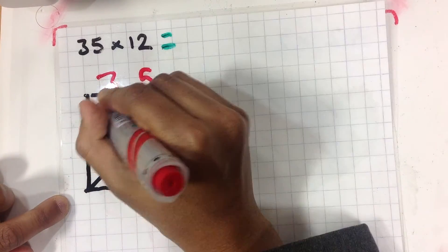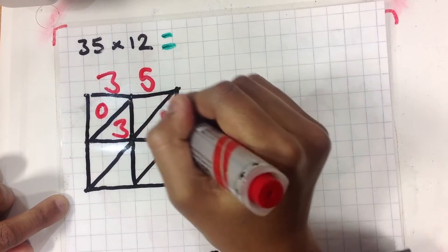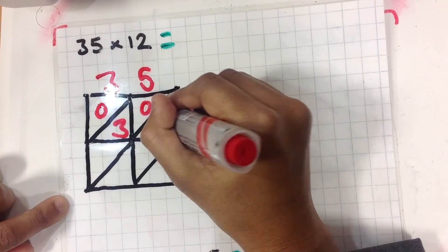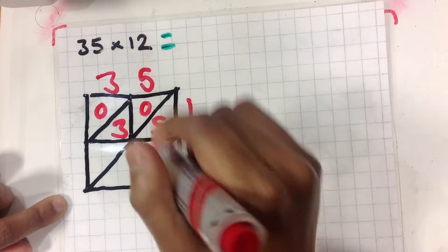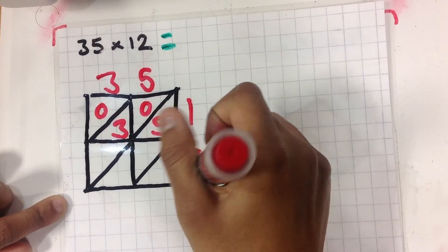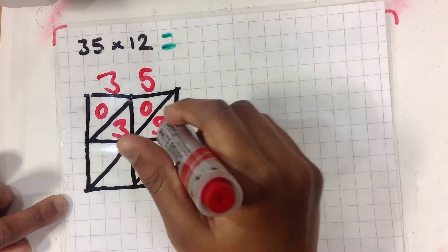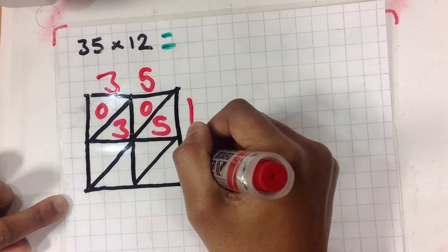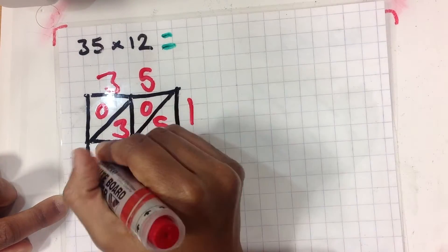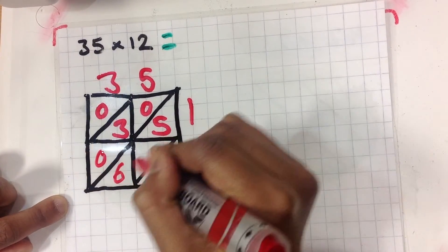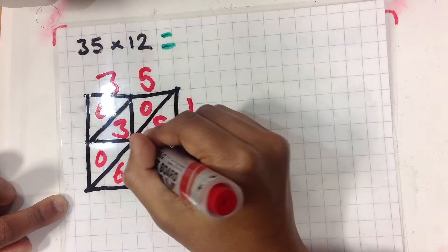You start by doing 1 times 3 equals 3, 5 times 1 equals 5. You put the 0 on there, on the top, and the answer at the bottom. 2 times 3 equals 6. 2 times 5 equals 10.